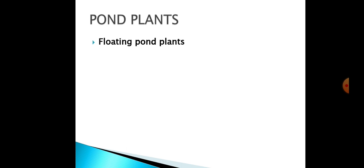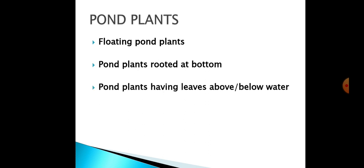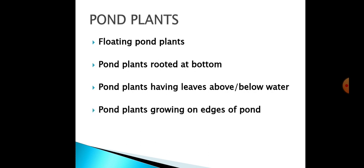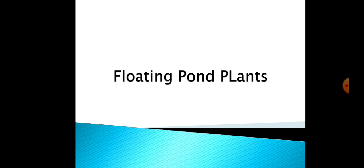There are different categories of pond plants. Some plants float on the surface of the water to get enough sunlight. Some are rooted at the bottom of the pond. Some have leaves both above and below the water surface. And some plants grow on the edges of the pond. We will discuss each category one by one.